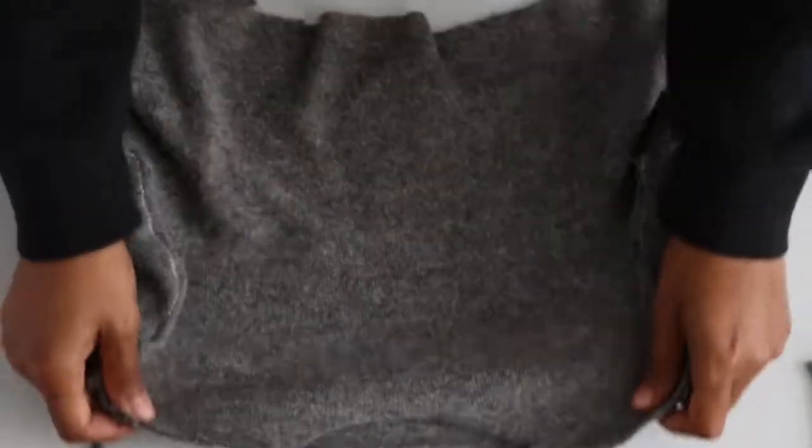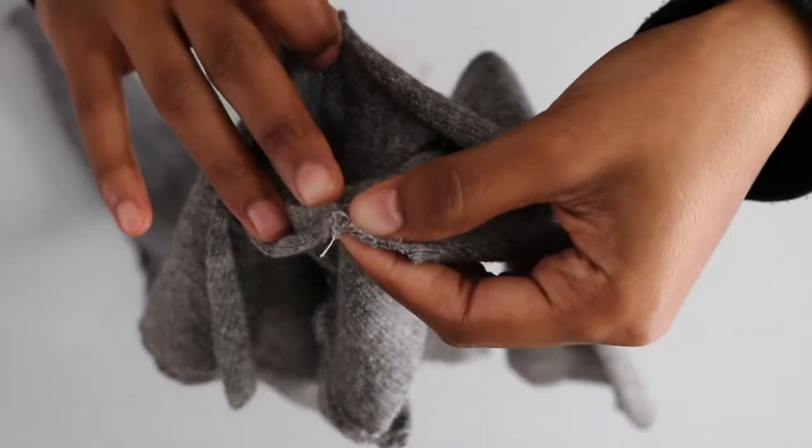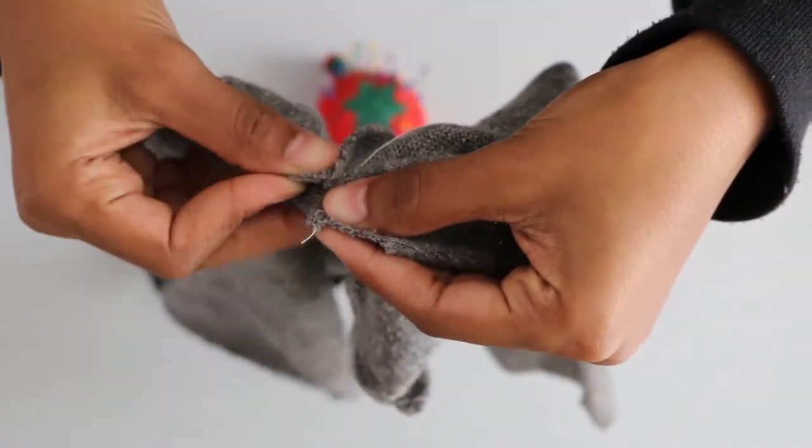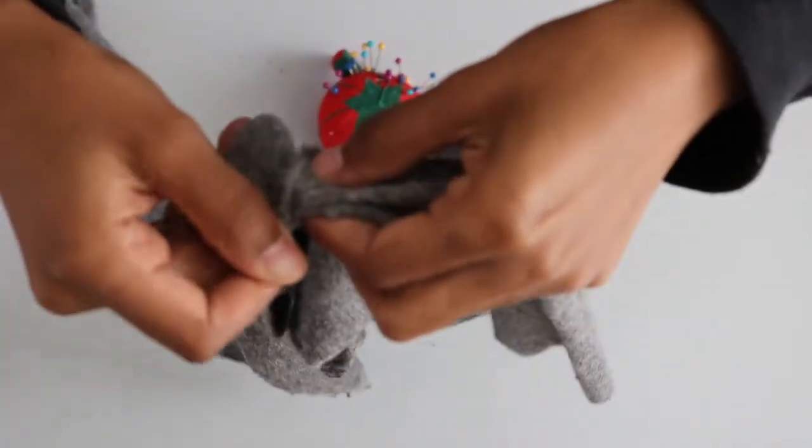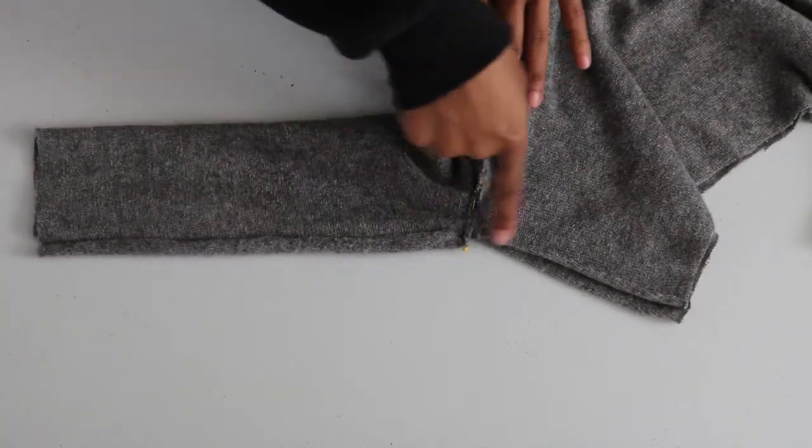Then I'm flipping it inside out. And here I'm pinning both the end of the underarm seams together. And now that's ready to sew all the way straight down.